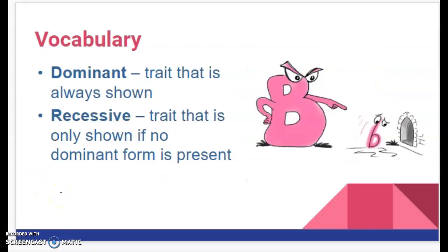Dominant means if you've got one of these alleles, you're going to see it expressed. Recessive means you won't see it if the dominant form is present — the dominant basically dominates it. Not all genes follow dominant-recessive patterns though. Mendel did his pea plant experiments and did observe dominant-recessive, and there are some human traits that follow that pattern too.